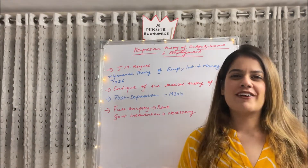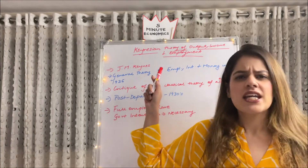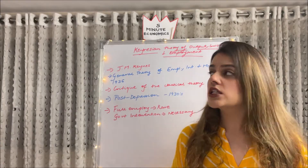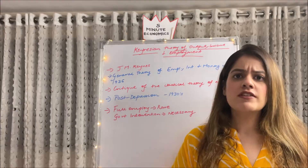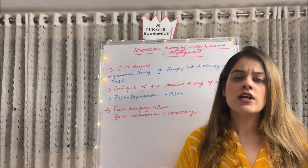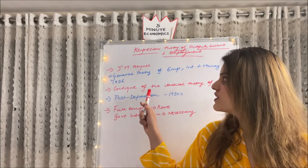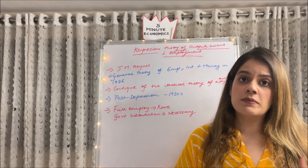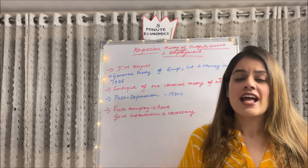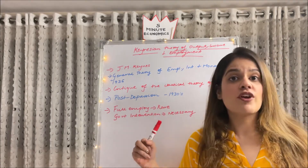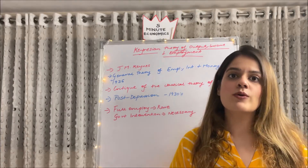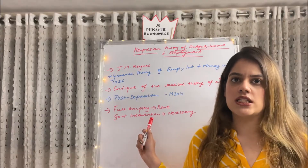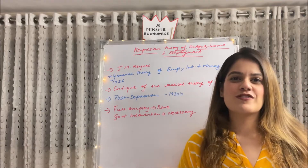Let me give you a little background of this theory. As the name suggests, it was formulated by John Maynard Keynes in his famous work, General Theory of Employment, Interest and Money in 1936. This theory was a critique of the classical theory, which believed in automatic adjustment — the invisible hand. During the post-depression period of the 1930s when the Great Depression hit, it was realized that had the classical theory been successful, we would never reach a stage of depression. Keynes said full employment is a rare scenario, and government intervention — ignored in the classical theory — is necessary to achieve full employment.